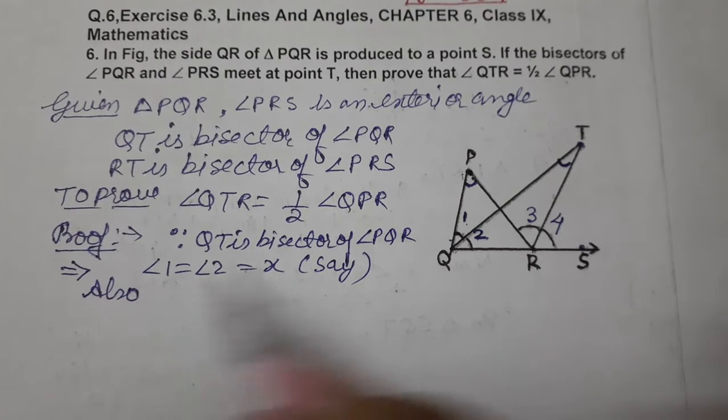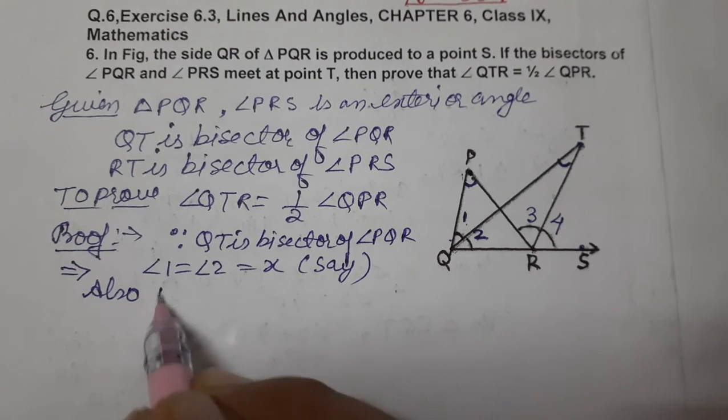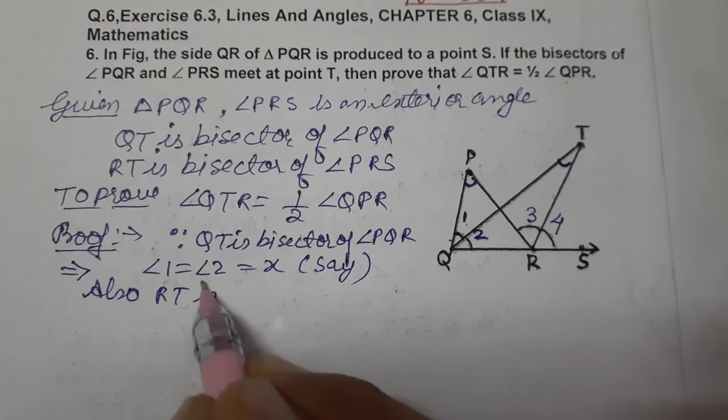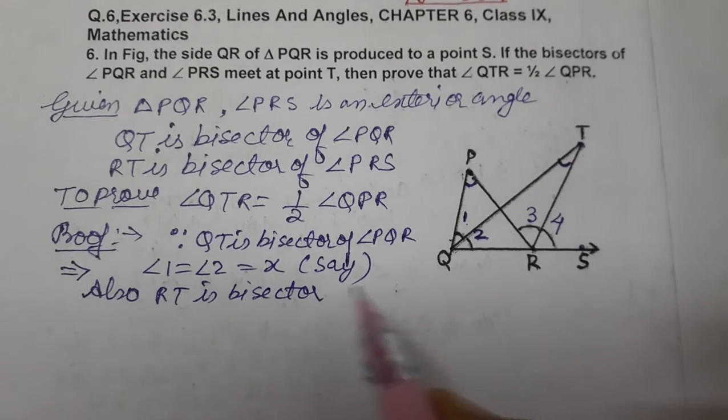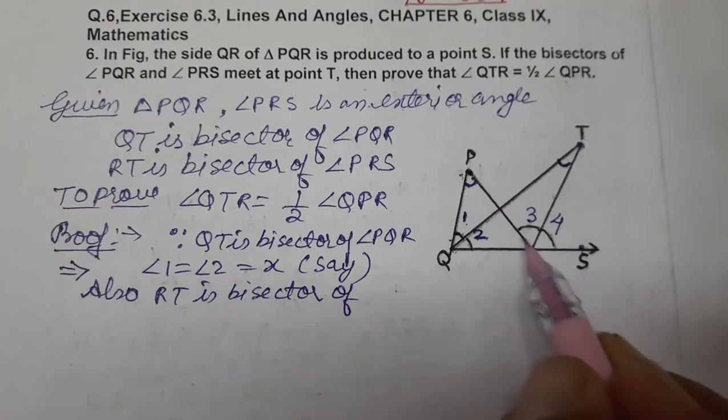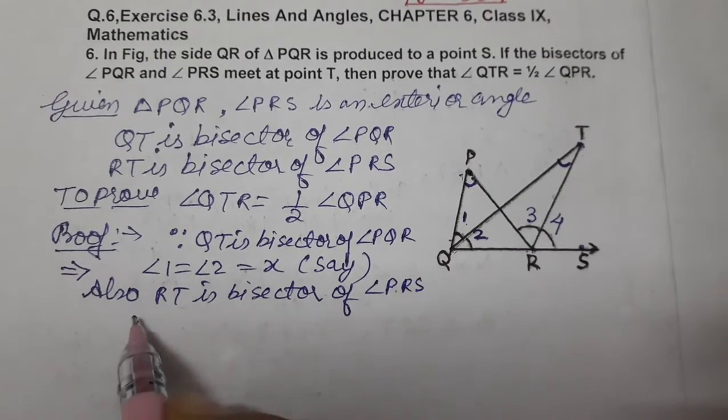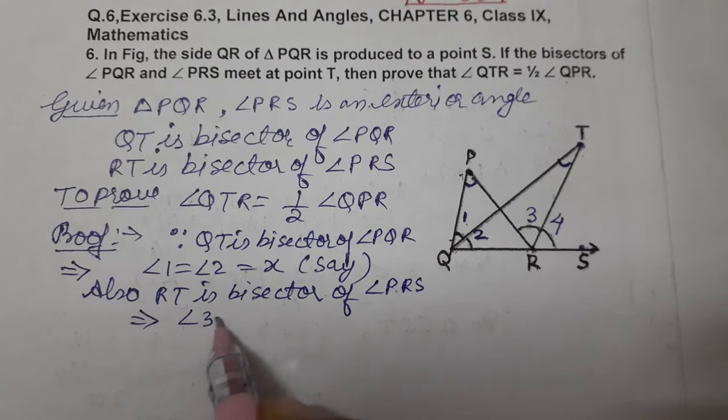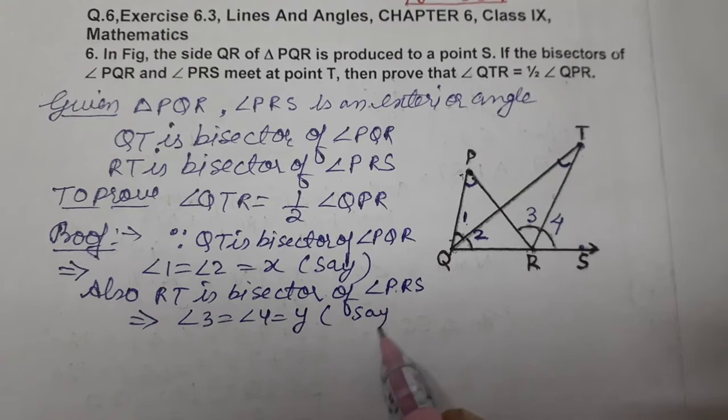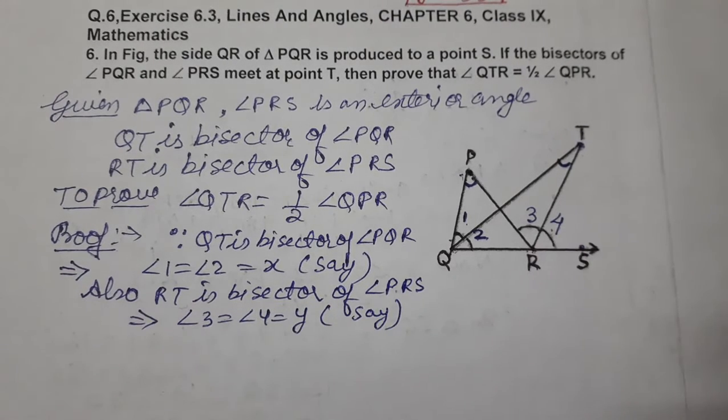Also, RT is bisector of angle PRS, so this results in angle 3 equals angle 4 equals y. Both angles equal to y.